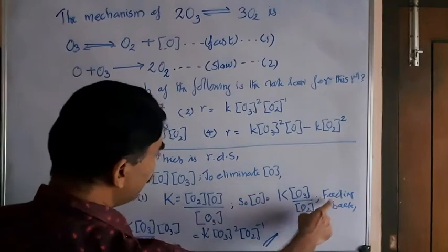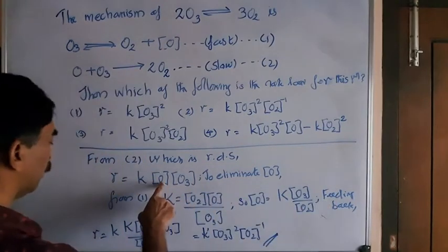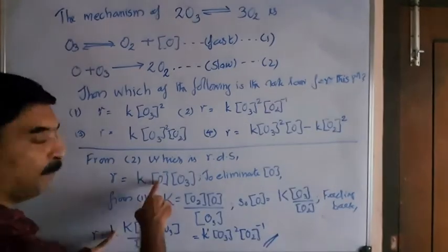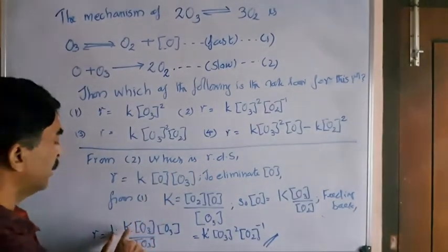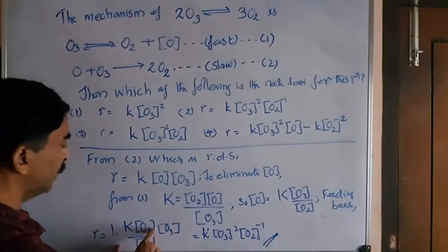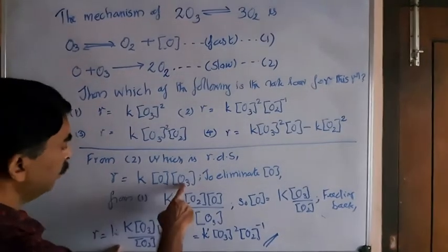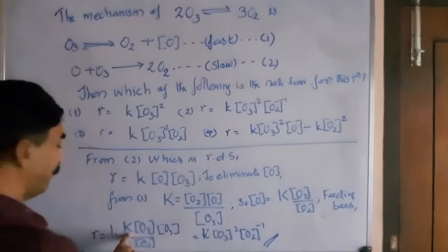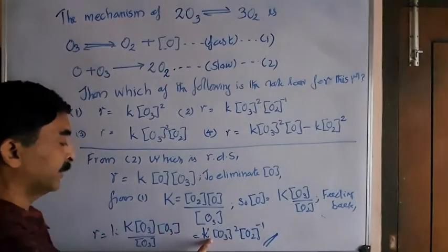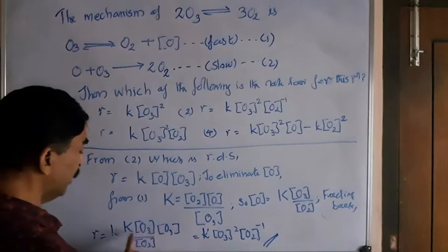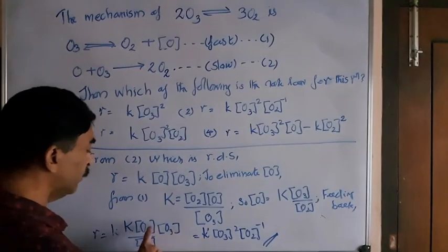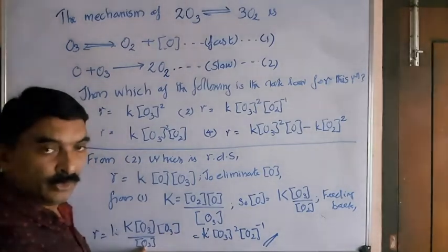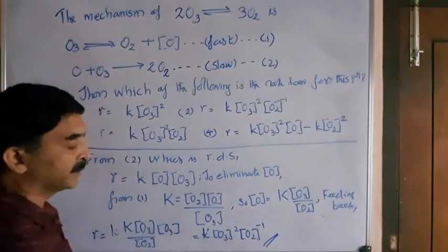Now we feedback this in the basic rate law. So we can write R is equal to K into, in the place of square bracket O, we write capital K into O3 by O2 into the other O3. Two constants merge K into K. Two constants merge to a new constant K dash. So what is the result? K dash into O3 into O3, O3 square, and this brought to numerator, O2 to the power minus 1.